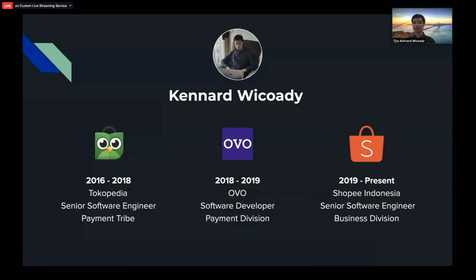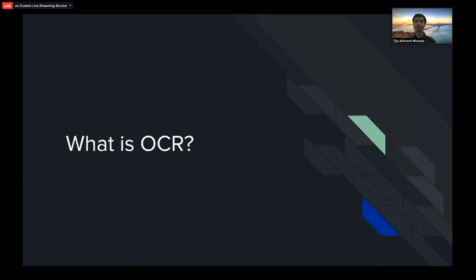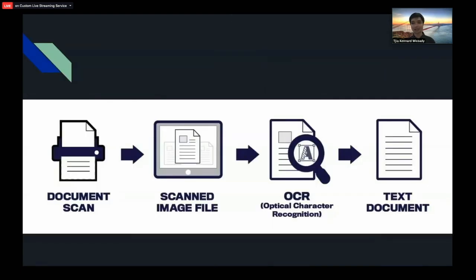What's OCR, and why should we talk about this topic? OCR itself is an ability system that can scan an image of text and identify them into a text document. When the image is full of text, it will be scanned and converted into an editable text document that can be processed into your systems or third-party systems.